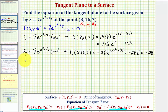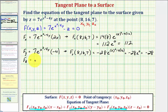Finally, the partial with respect to z, treating x and y as constants. The derivative of the first term with respect to z is zero. The derivative of negative z with respect to z is negative one. So at any point, the partial with respect to z is negative one.